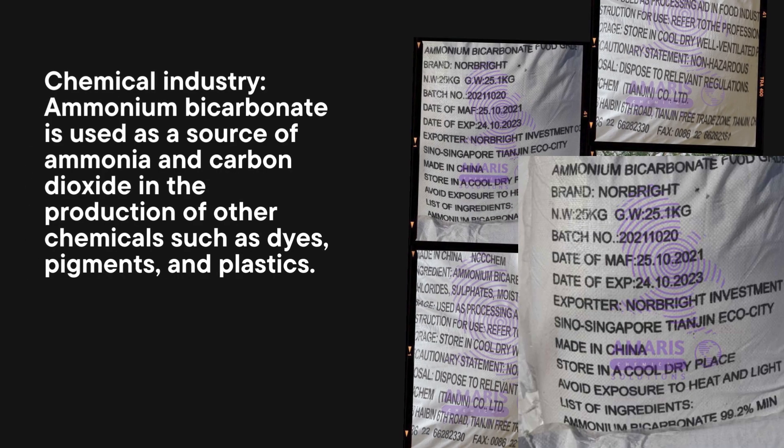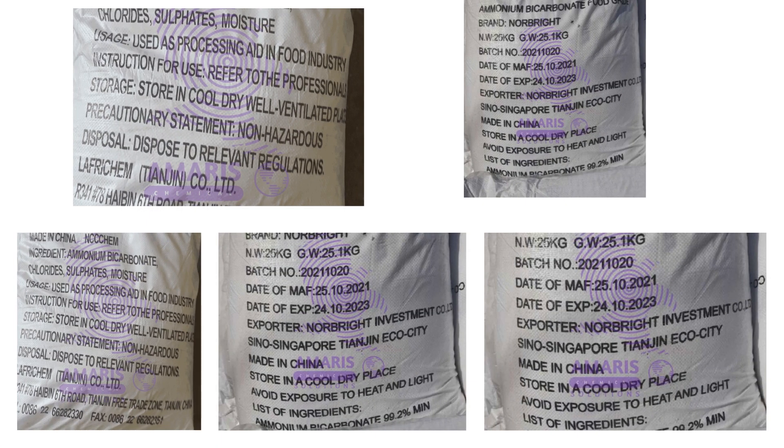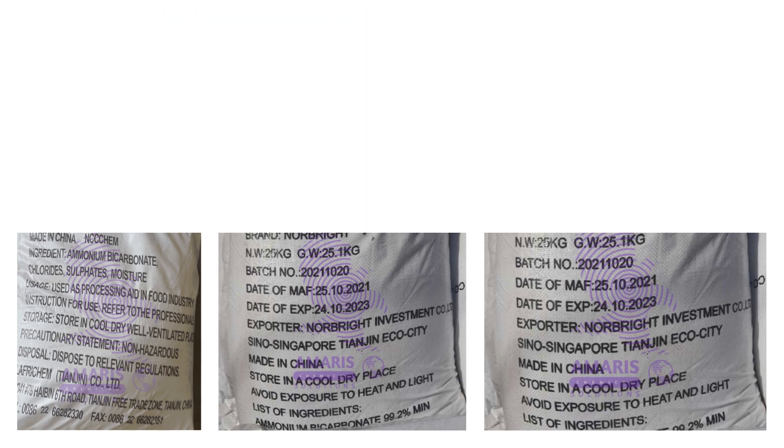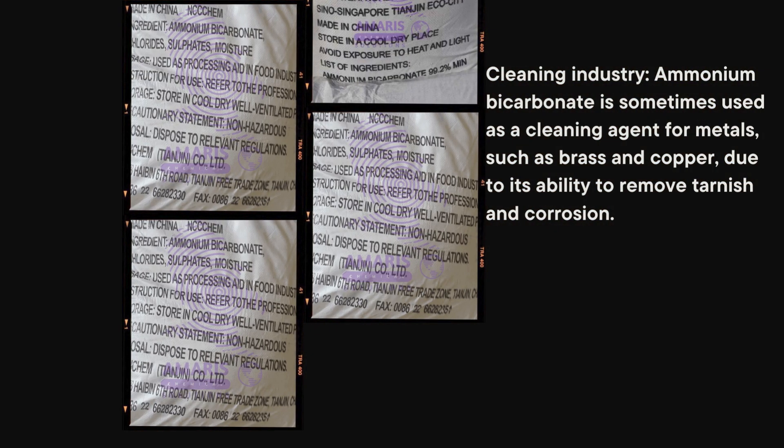Ammonium bicarbonate has a variety of uses across different industries. Here are some of the most common uses. In the food industry, ammonium bicarbonate is commonly used as a leavening agent in baked goods such as cookies, crackers, and biscuits. It produces carbon dioxide when heated, which causes the dough to rise and gives the baked goods a light and fluffy texture.